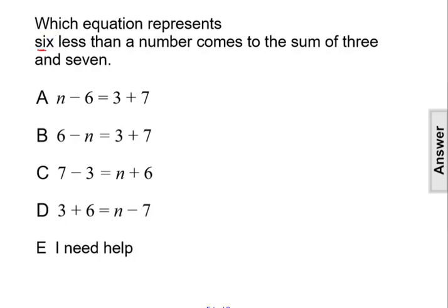First, we have six less than a number. So six is the number six. Then we have less than. So that's the operation of subtraction, and we have to keep in mind because there is the than that we have to switch the order of the things that are being subtracted.